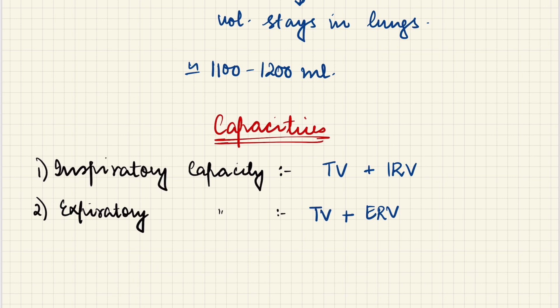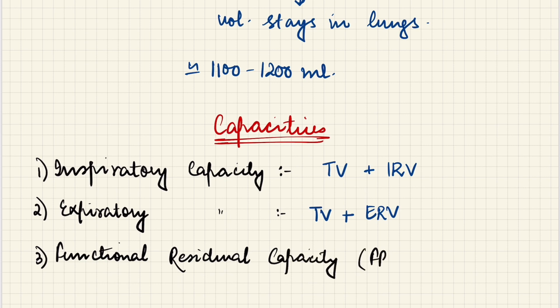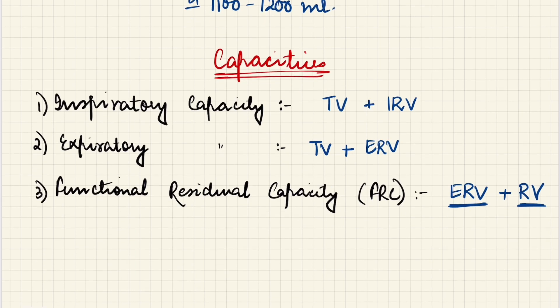Now comes the functional residual capacity, or FRC. The name suggests it is the volume of air that will remain in the lungs after a normal expiration — not a forceful one. After a forceful expiration, the volume that stays is the residual volume. But after a normal expiration, the tidal volume has gone out, so expiratory reserve volume remains, because for that you need forceful expiration. Plus there is one volume that always remains — the residual volume. So FRC equals expiratory reserve volume plus residual volume.